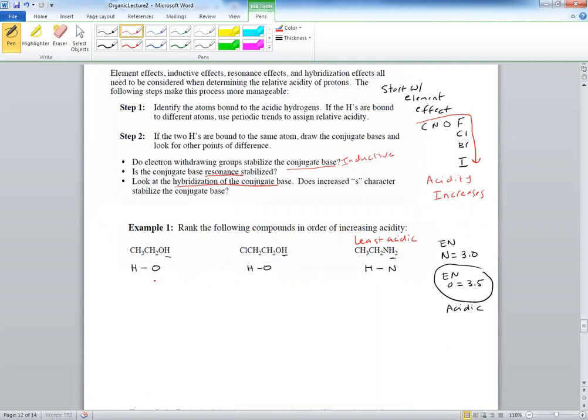But we still don't know enough about these two. So rule one, step one applies to this one versus these two because they are bound to different atoms. Here you have N, here you have O in each. So these are different atoms. So that's the element effect. Now the element effect may not work after step one. So that's why you need to look at step two.